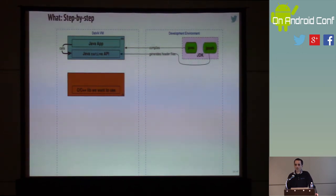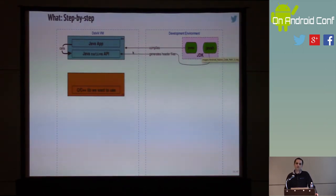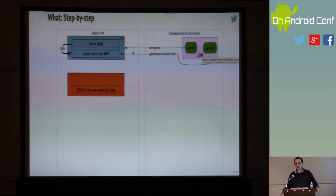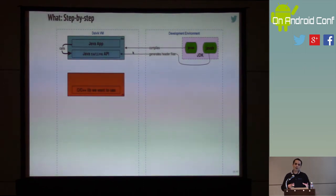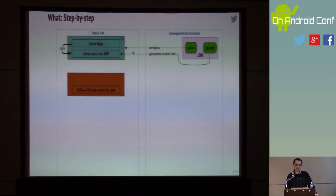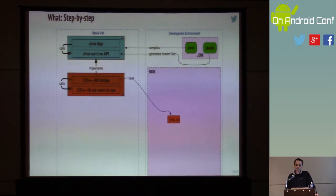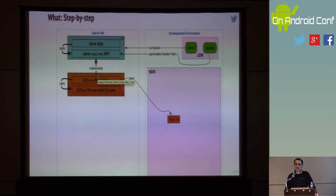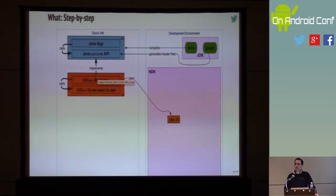We then use a tool that is part of the JDK called javah, which can be run against this Java native API class to produce a C header file that essentially defines the prototypes of the functions we're supposed to implement. JNI — for those who don't know — stands for Java Native Interface. It's been part of Java since I believe 1.1.